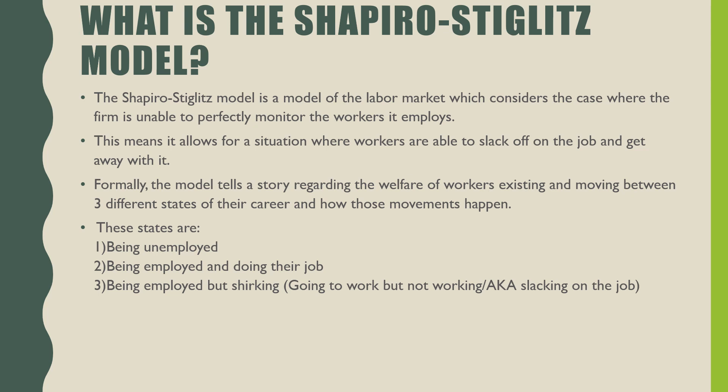So what is the Shapiro-Stiglitz Model? It is a model of the labor market which considers the case where a firm is unable to perfectly monitor the workers it employs. This means it allows for a situation where workers are able to slack off on their job and get away with it. Formally, the model tells a story regarding the welfare of workers existing and moving between three different states of their career, and how these movements happen.